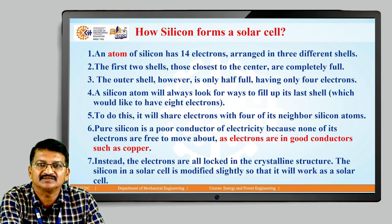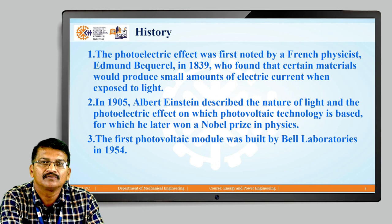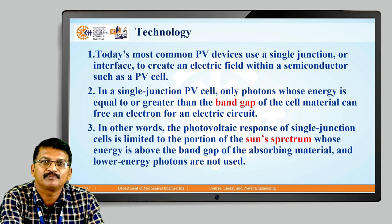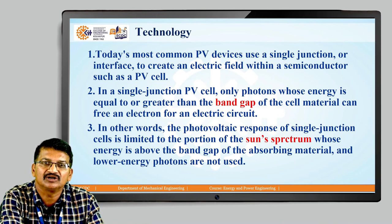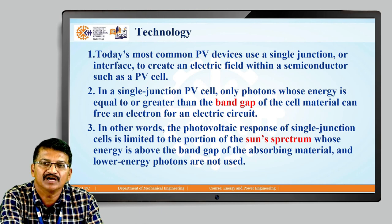Today's most common PV devices use a single junction or interface to create an electric field within a semiconductor such as a PV cell. In a single junction PV cell, only photons whose energy is equal to or greater than the band gap of the cell material can free an electron for an electric circuit. The photovoltaic response of single junction cells is limited to the portion of the sun's spectrum whose energy is above the band gap of the absorbing material; lower energy photons are not used.